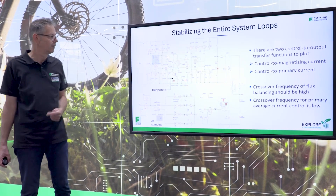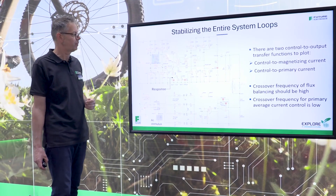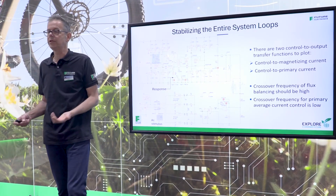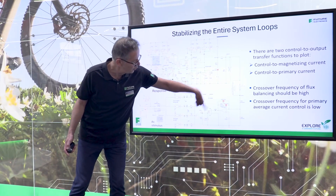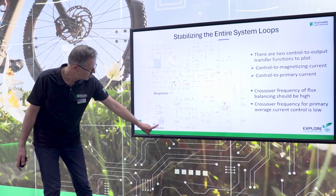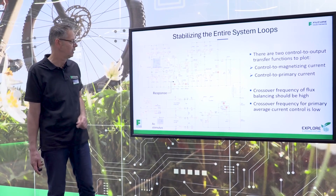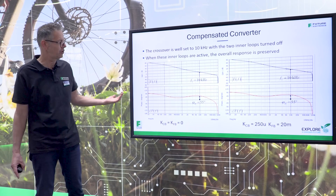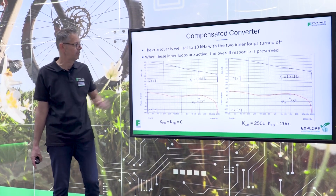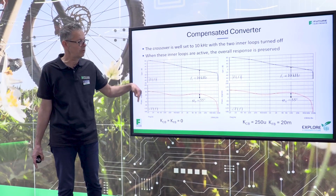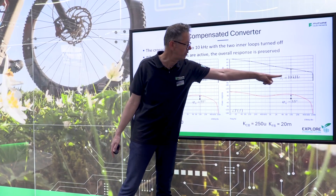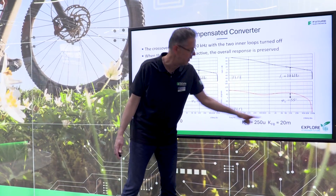We have three loops. There are two inner loops — one looking at the magnetizing current and the other looking at the primary side current — and then the overall outer loop, which maintains the output voltage or output current constant depending on the regulated variable. I am injecting the AC stimulus here and observing how it propagates through the sensor. Once done, I can look at overall stability when the two inner loops are turned off, confirming a 10 kHz crossover frequency with 55 degrees phase margin. When the inner loops are turned on, the outer loop is not disturbed at all — I have the same crossover frequency with a very good phase margin when the two loops are active.